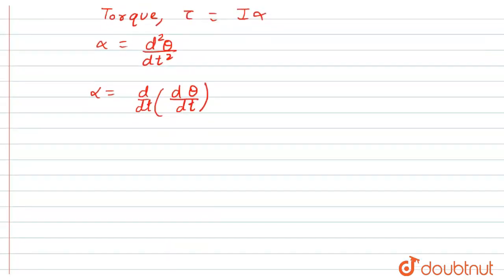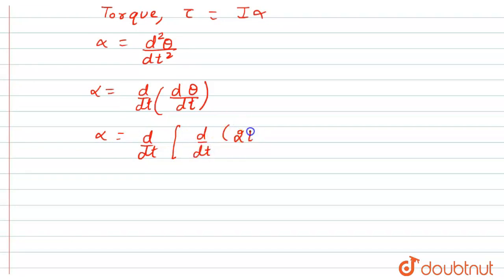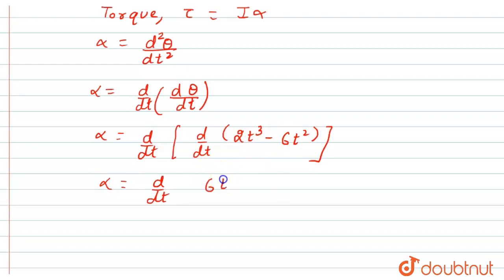Now we use the expression θ(t) = 2t³ - 6t². Differentiating with respect to t gives dθ/dt = 6t² - 12t. Differentiating again gives α = 12t - 12.